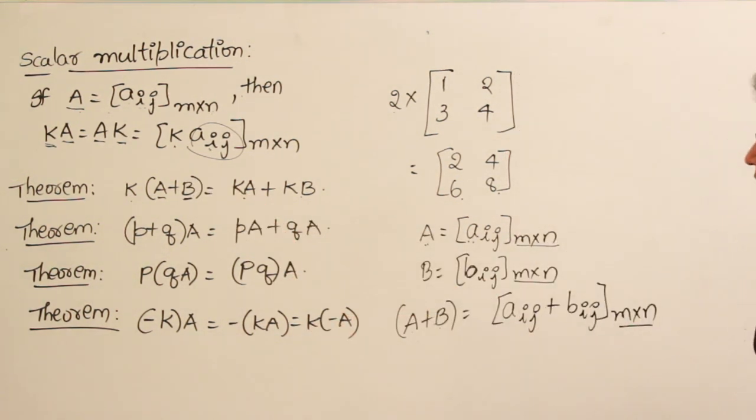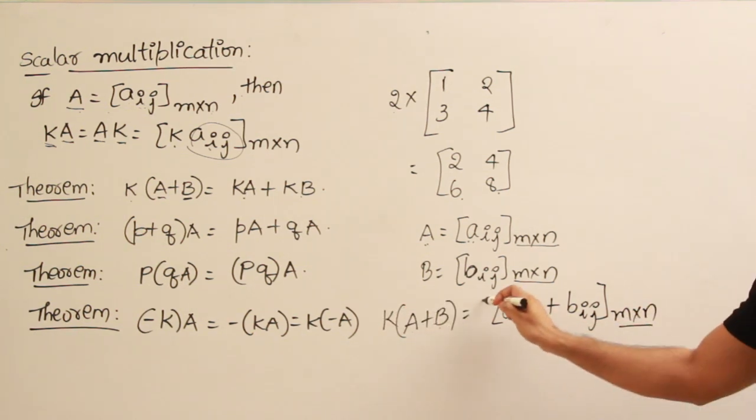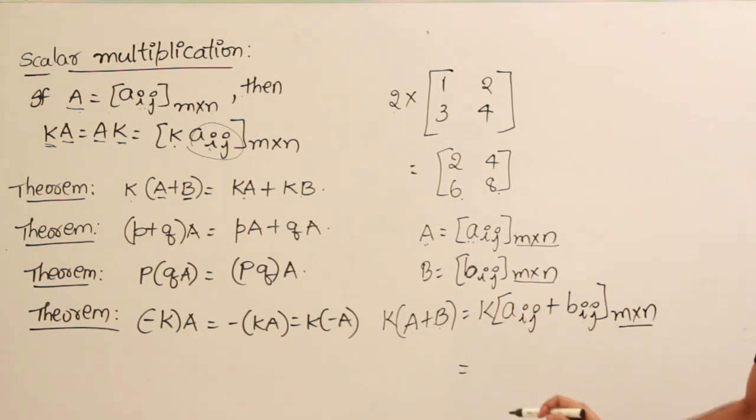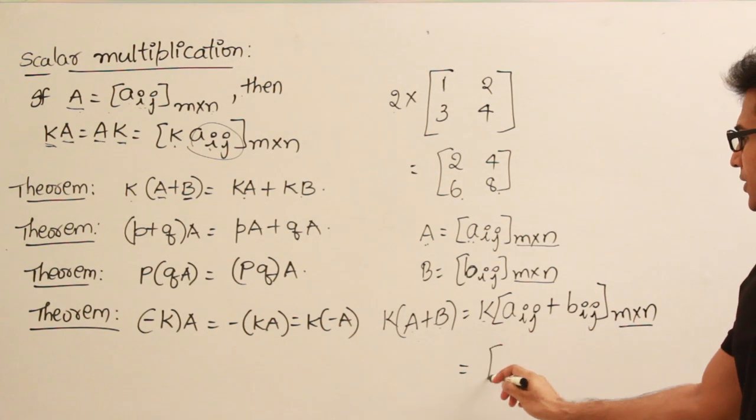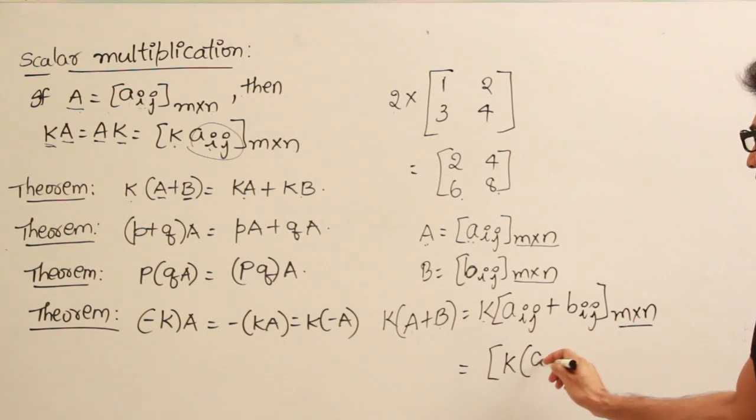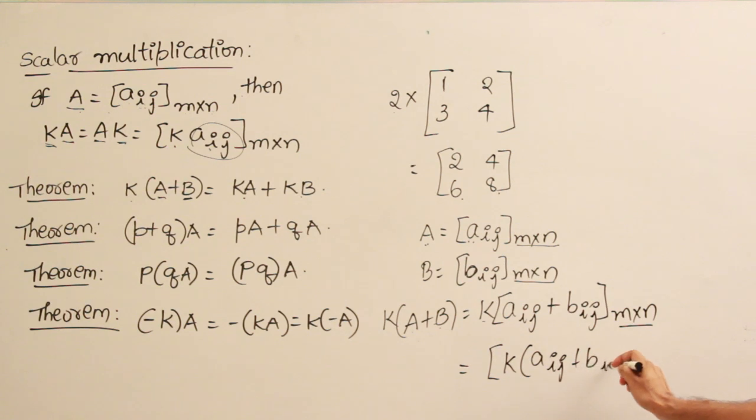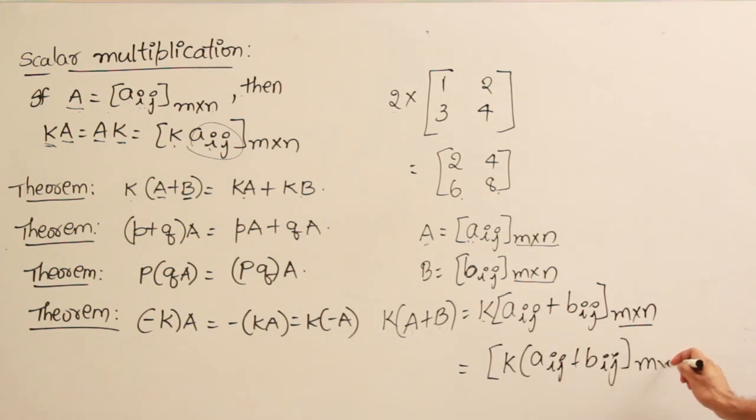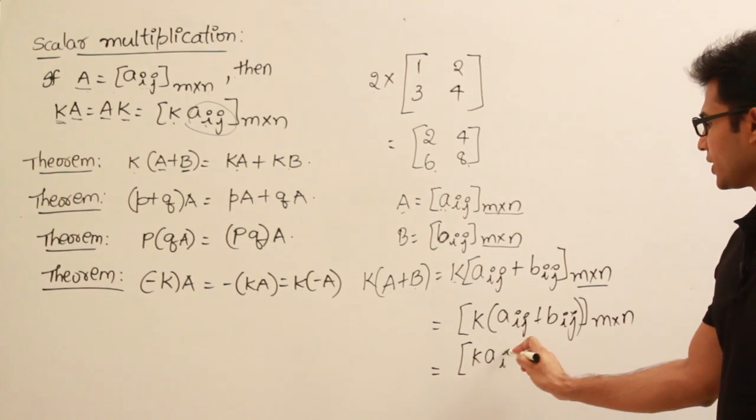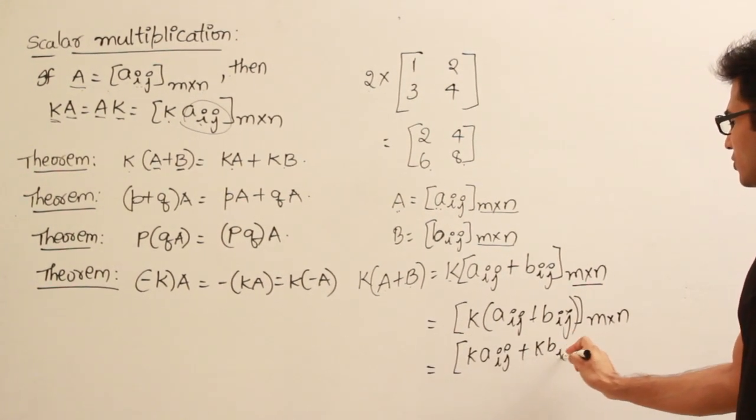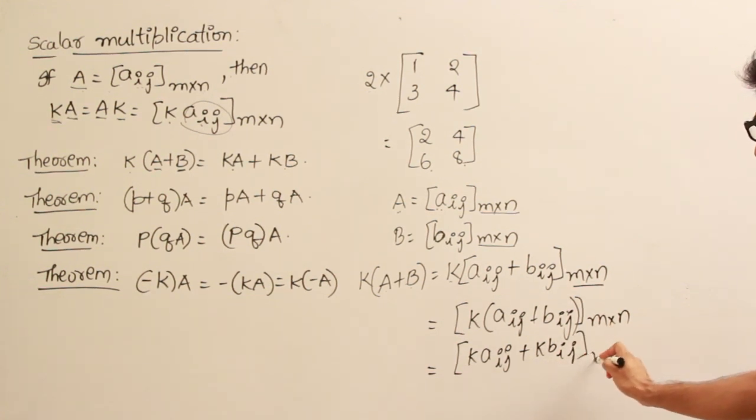And now if you are going to multiply with k, here if I multiply it with k, then what happens? You can take this k inside. We can write it like this: b_ij m by n. Then what is this entire number going to be? You can distribute k because scalar multiplication is distributive. Then what do we get? k(a_ij) + k(b_ij).